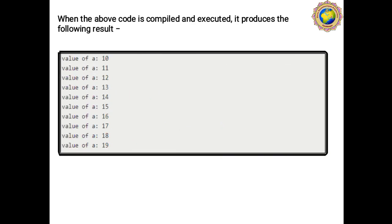The output of the While loop program starts from 10, then 11, 12, 13, 14, 15, 16, 17, 18, 19. When the program is compiled and executed, it produces these following results. This concludes the While loop concept.